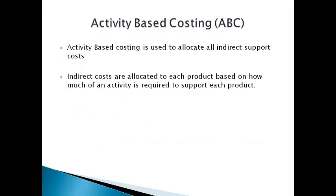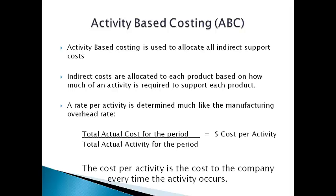Activity-based costing allocates indirect costs to each product based on how much of an activity is required to support each product. A cost each time the activity occurs is determined by dividing the total cost by the total activity during the period. Activity-based costing is generally done using actual amounts.